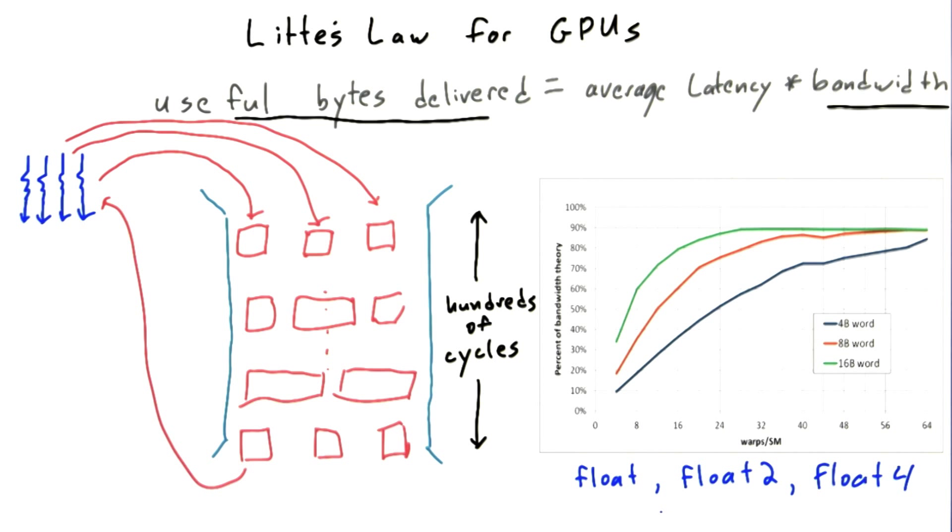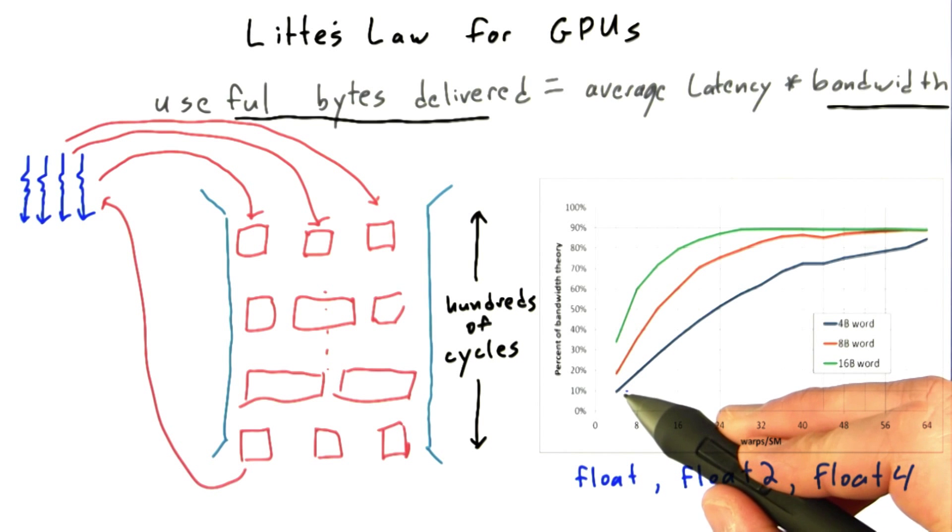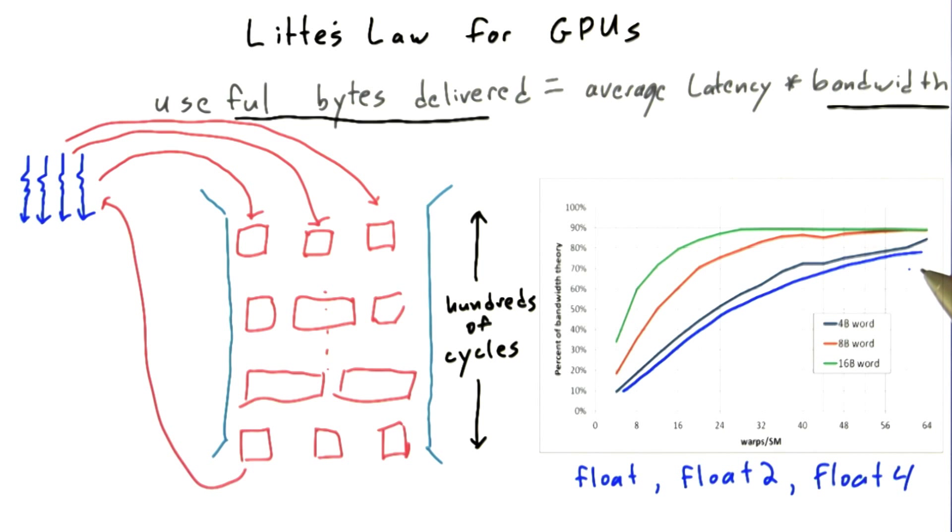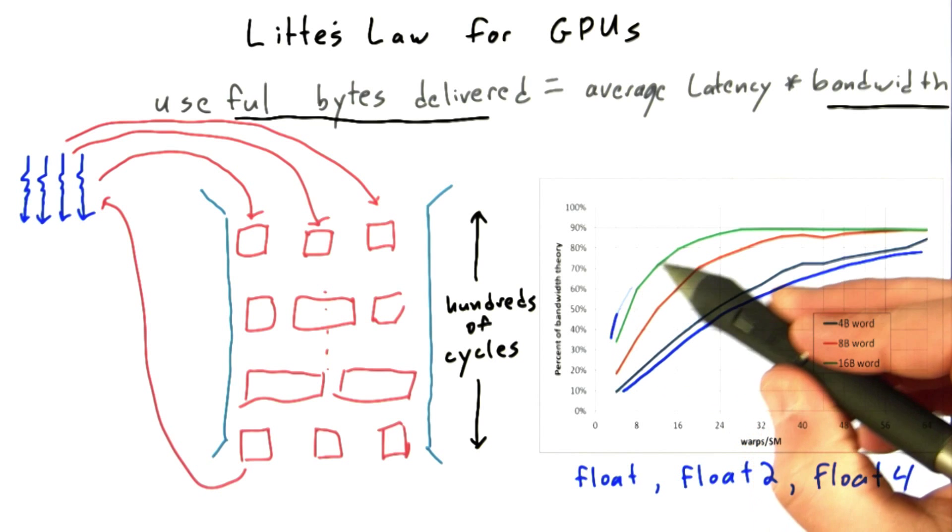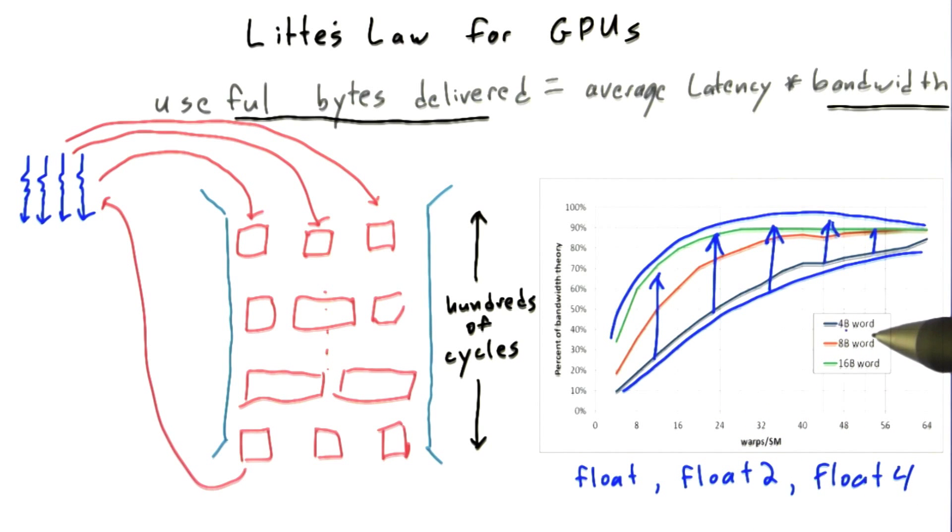And so one option that we could do is we could try to restructure our code around the idea of having a single thread pull in four floating point numbers at a time and do its transpose on that. That would move us up from this line, which is percent of achieved bandwidth, up to this line. That's a healthy increase.